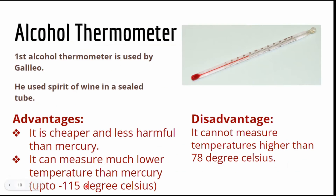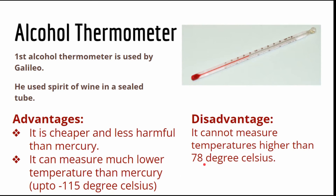Now let us see the alcohol thermometer. Inside it is filled with alcohol, which is red in color. It was first used by Galileo, who used the spirit of wine in a sealed tube. Its advantages are that it is cheaper and less harmful than mercury, since mercury is a very poisonous substance, and it can measure much lower temperatures, down to minus 115 degrees Celsius. Its disadvantage is that it cannot measure temperatures higher than 78 degrees Celsius.